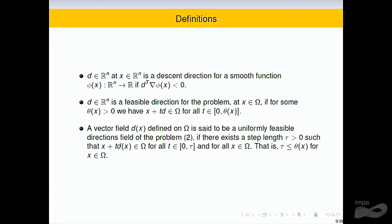First, we say that d is a descent direction at a point x when the directional derivative at x is negative. That is, we can walk along the direction d a certain step tau, reducing the function. A feasible direction is when, at a feasible point, we have a direction and we can walk along this direction remaining feasible a certain distance t.